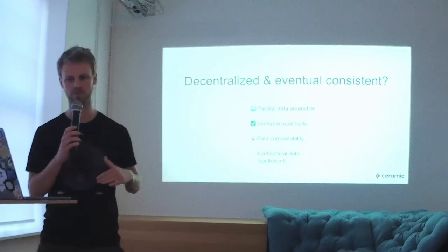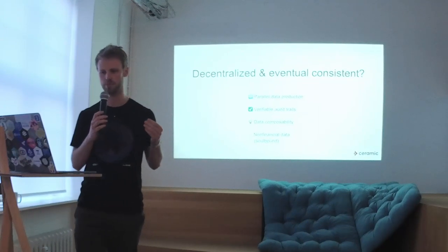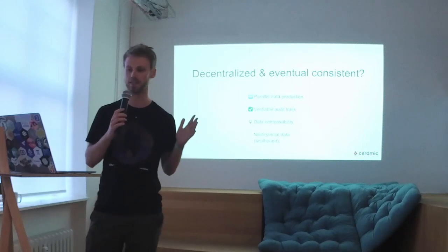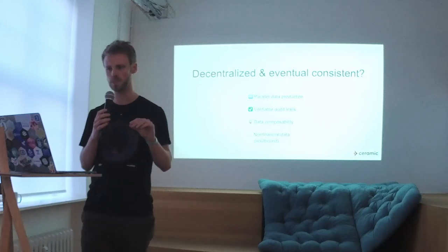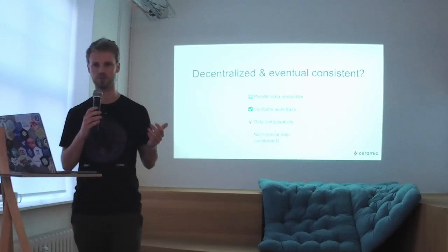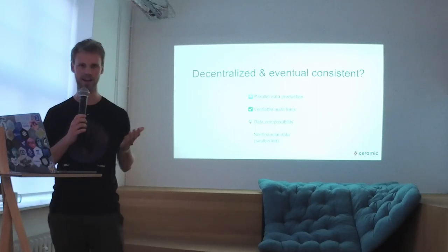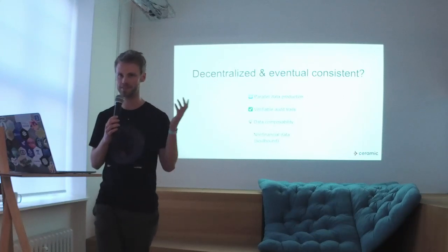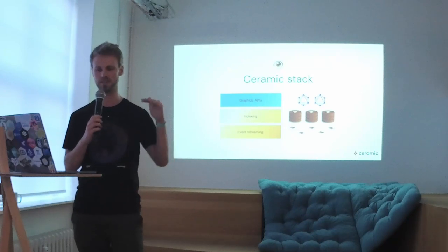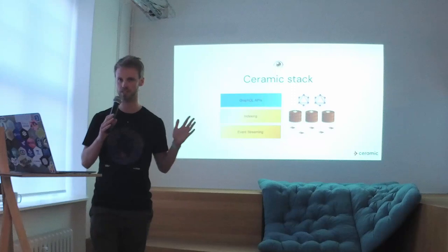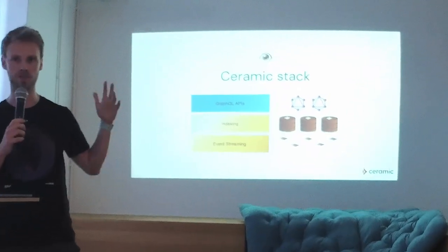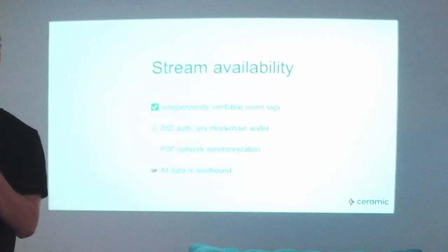We need a decentralized system that is eventually consistent, that allows us to produce data in parallel without the limitation of the blockchain's block producer. We can achieve this if we have verifiable audit trails, which can enable data composability. One key thing: we can achieve parallel data production with eventual consistency by focusing on non-financial data, because financial data really needs strong consistency to function correctly. I tend to think of that as soulbound data because you can't trade it. With Ceramic, we're building a solution for this, split into three pieces: event streaming at the bottom — basically a hash-linked log of events — an indexing system on top that builds a view over the event streams, and a GraphQL API that allows you to easily query the data.